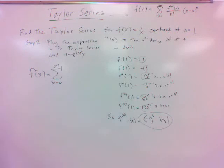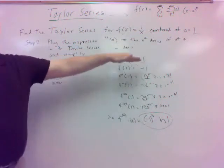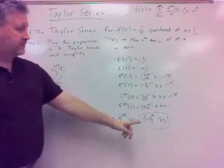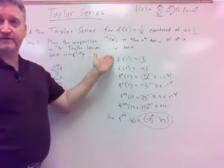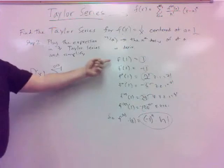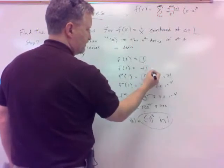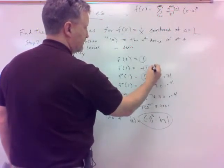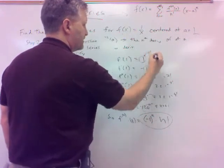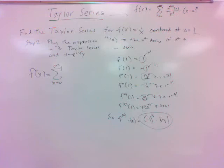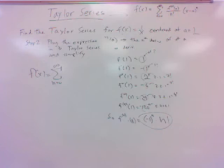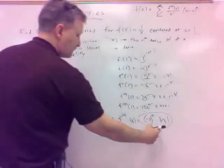Notice we start at n equals 0. One thing you have to be real careful with, especially on these, is the first few of your formula. You need to make sure it works for n equals 0 because we need to start there — this is the zeroth derivative, just the function. Does it work? Is negative 1 to the 0 times 0 factorial equal to 1? Well, 0 factorial is 1 by definition, so this works for any n whatsoever.